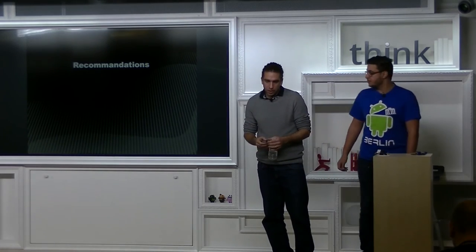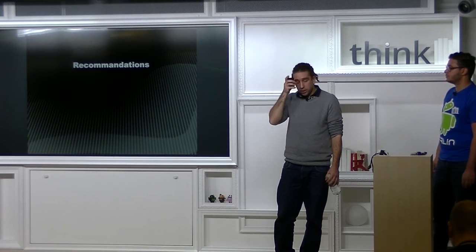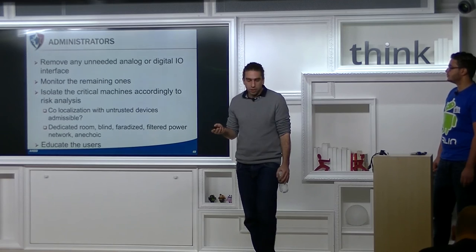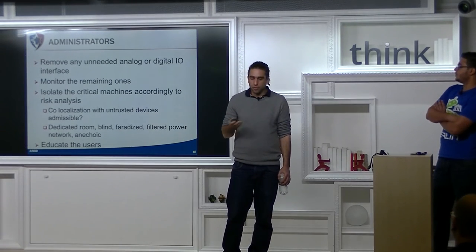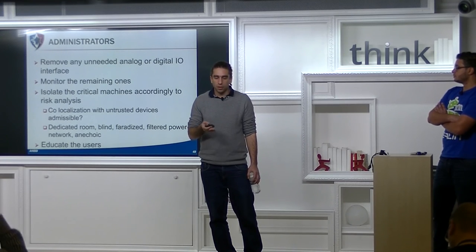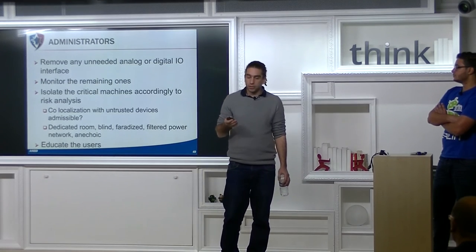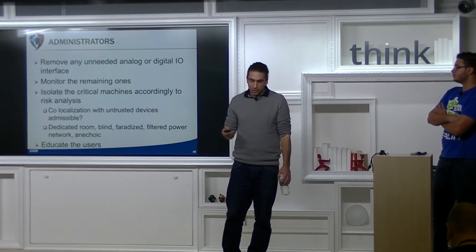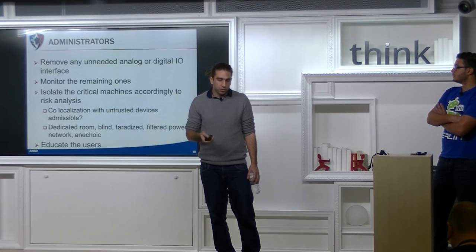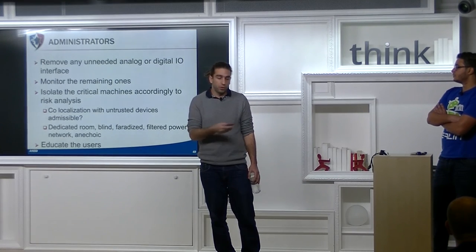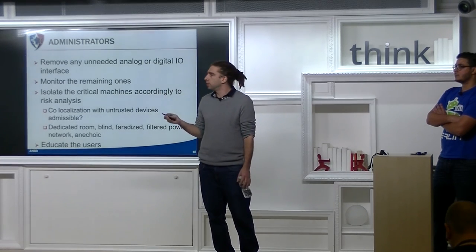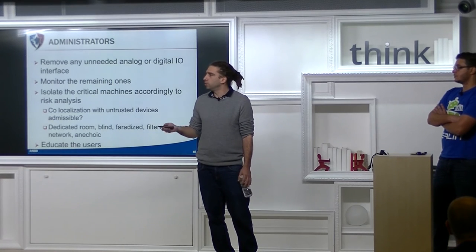Now we're going to present some recommendations — more some reasonable thoughts about the problem. First, we address the administrators: we emphasize the necessity to remove any analog or digital IO interface, and insist on the point that any sensor must be considered as an input interface, not only network communication interfaces. Of course, try to monitor the remaining ones. For example, for the temperature sensor, noticing very fast increases of temperature is not a realistic case, so it can give a clue that something is going on.